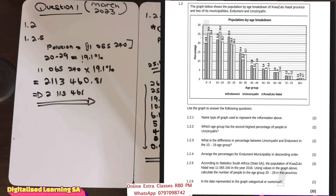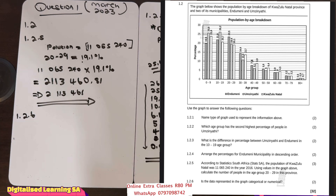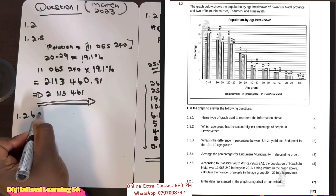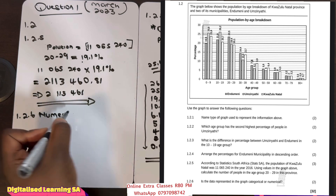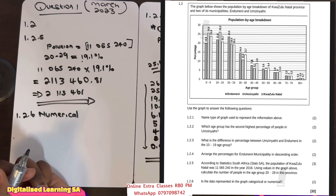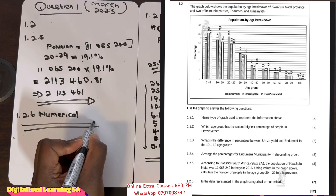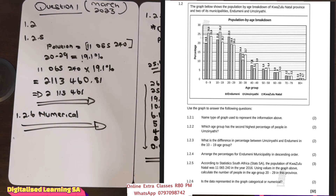Now let's move to question 1.2.6. The question says: is the data represented in the graph categorical or numerical? If we look at our graph, the data is presented in numbers, so the answer will be numerical. If it was presented in words, then it would have been categorical. That was our final question on this video. Don't forget to like, share and subscribe. See you in the next one.